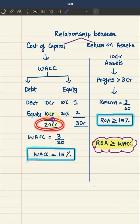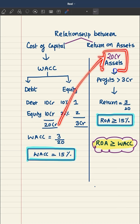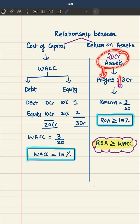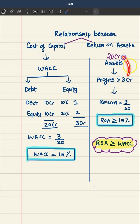Since this business has total funds of 20 crore, they will also have assets worth 20 crore. Now they have to use these 20 crore of assets and earn a minimum profit of 3 crore — because 3 crore is the cost. They should earn a minimum of 3 crore, so 3 crore on 20 crore is the return they should target. That works out to 15%, and this is the return on assets they should generate.